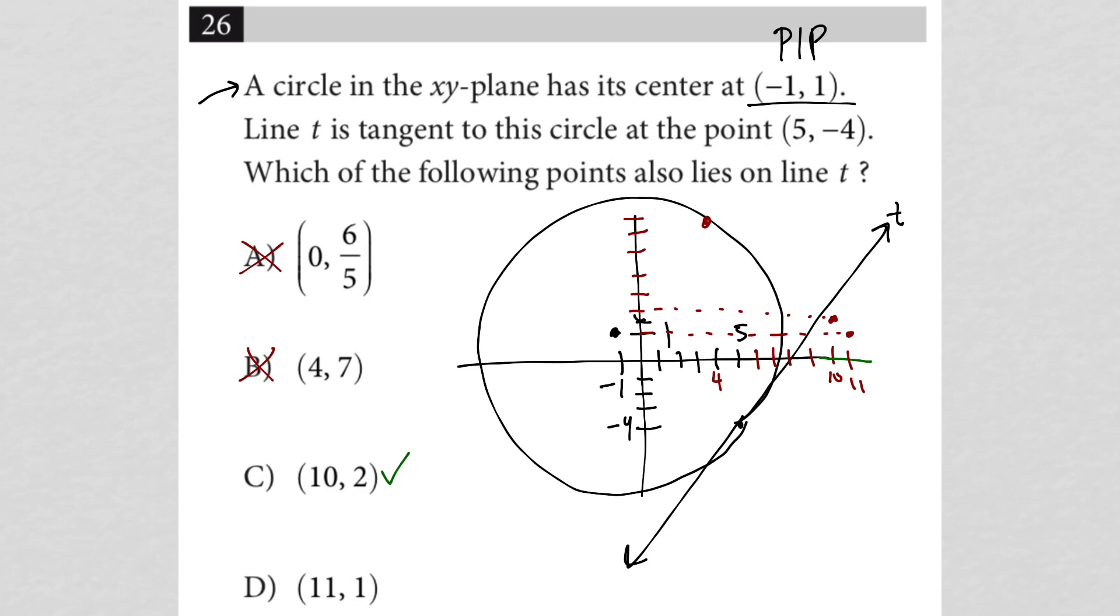But again, this is question 26. Time is probably running out at this point. There's only one more question left on this particular SAT non-adaptive test. So if I only had, you know, 30 seconds, 10 seconds or so, I would definitely choose C. But let's pretend like we have more time. Let's pretend like we wanted to be certain of our answer.